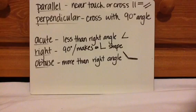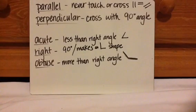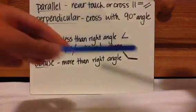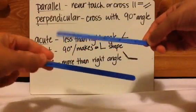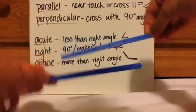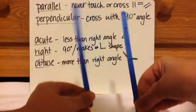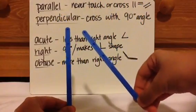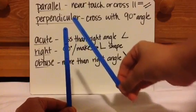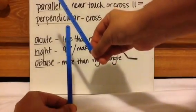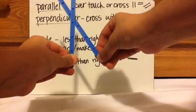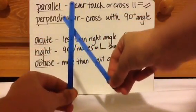Here are the five things we need to know. First, there are parallel lines. These are lines that never touch or cross. They can go in different directions. If they look like they're not touching but they would eventually cross if extended, then they're not parallel — they're intersecting. You need to assume that the line keeps going, and if it keeps going and they cross, that's intersecting.